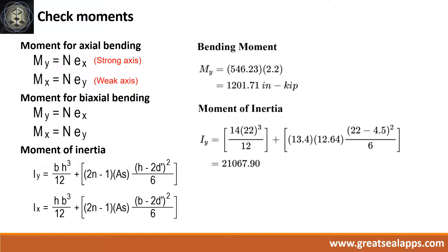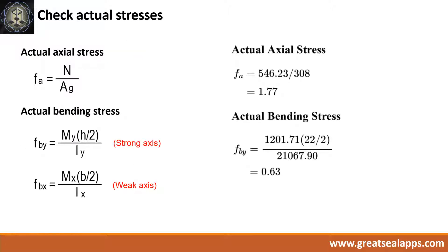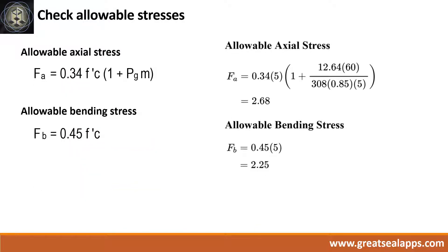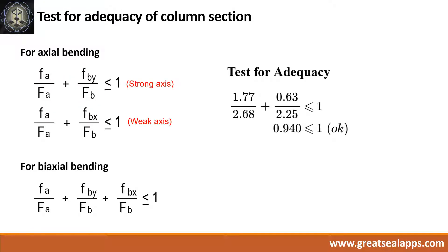Bending moment at the y-axis is 1,201.71 inch-kips, and the moment of inertia at the y-axis is 21,067.9. The actual axial stress is 1.77 and the actual bending stress at the y-axis is 0.63. The allowable axial stress is 2.68 and allowable bending stress is 2.25. The combined stress ratio is 0.94, which passes the adequacy test.